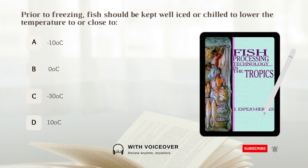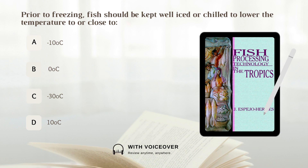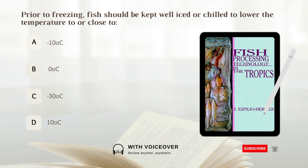Prior to freezing, fish should be kept well iced or chilled to lower the temperature to or close to: A. Negative 10 degrees. B. Zero degree. C. Negative 30 degrees. D. Ten degrees. Answer: B. Zero degree Celsius.